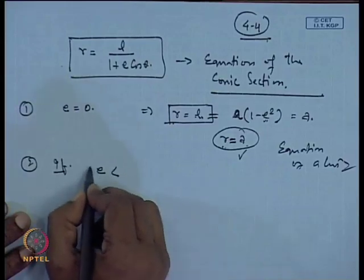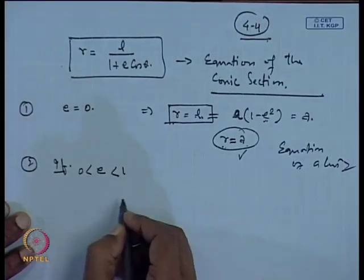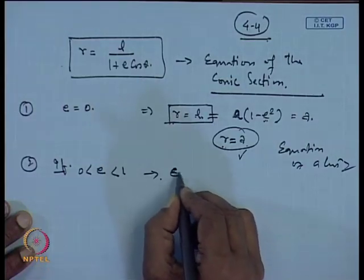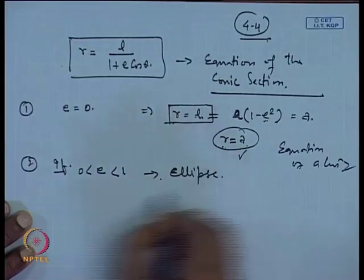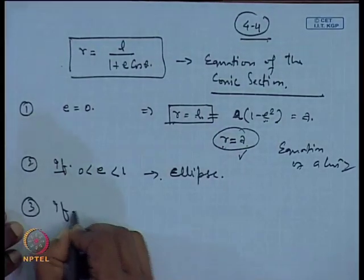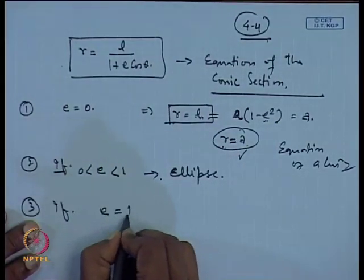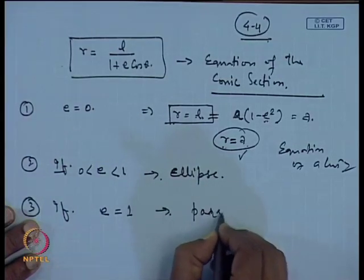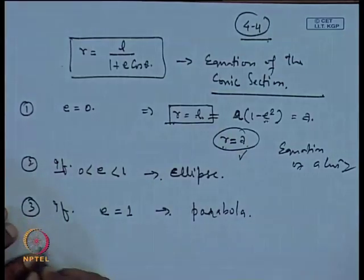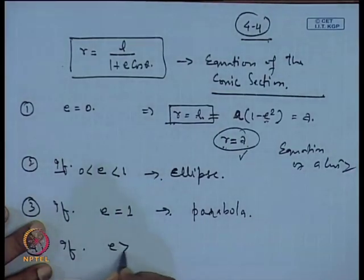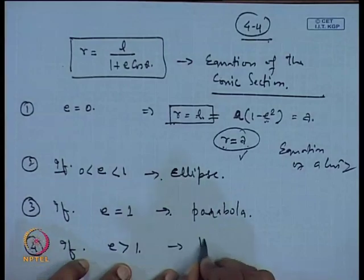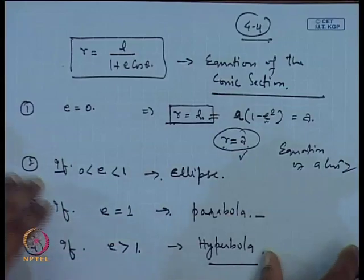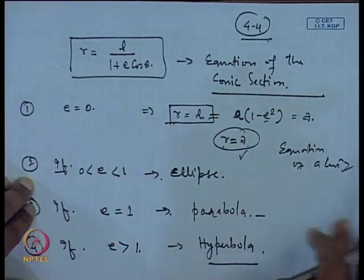If E is greater than 0 but less than 1, this becomes the equation of an ellipse. If E equals 1, this is the equation of a parabola. And if E is greater than 1, this results in an equation for a hyperbola. So we will now have a look at what the hyperbola, ellipse, and other curves are.